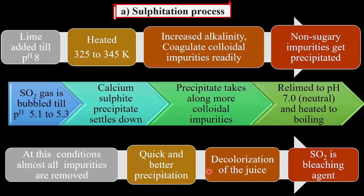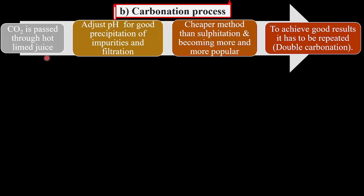This process also causes the decolorization of the juice because sulfur dioxide gas is a bleaching agent. The second procedure used for clarification of the juice in the one-step process is the carbonation process. In this carbonation process, carbon dioxide gas is passed through the hot limed juice, and the pH is adjusted to get good precipitation of the impurities and filtration. This method is cheaper than the sulphitation process and is becoming more and more popular. It achieves good results, but it has to be repeated — that means the double carbonation process must be used.